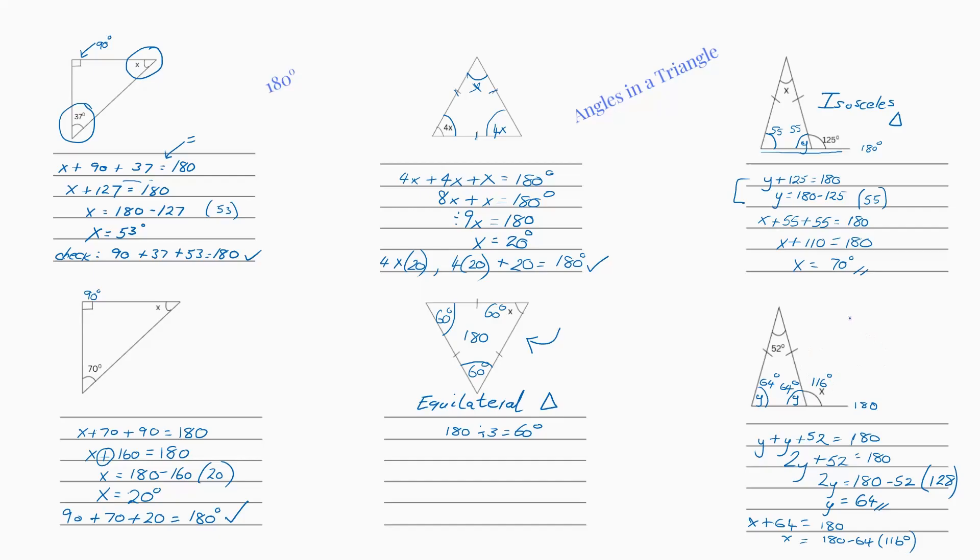And you can always check it by doing 116 plus 64. 6 plus 4 is 10, 6, 7, 8 and then 1. So we know our x is right. We don't need to check any further because if that's right, that angle is going to be right.